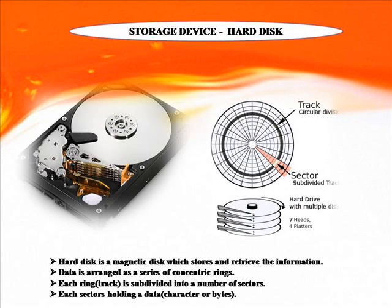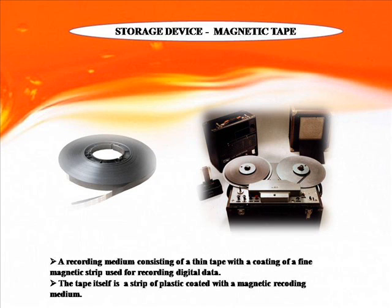Storage Device: Hard Disk. A hard disk is a magnetic disk which stores and retrieves information. Data is arranged as a series of concentric rings, each ring subdivided into a number of sectors, with each sector holding data. Magnetic Tape: A recording medium consisting of a thin tape with a coating of fine magnetic stripe, used for recording digital data. The tape itself is a strip of plastic coated with a magnetic recording medium.